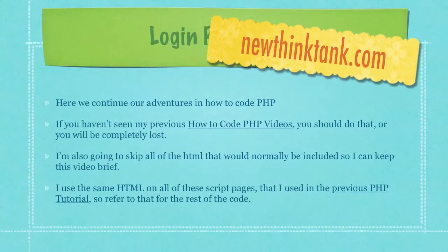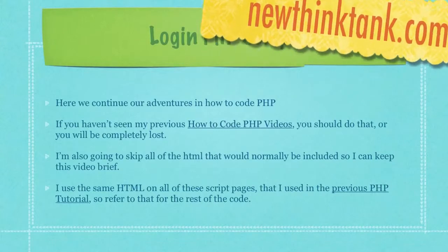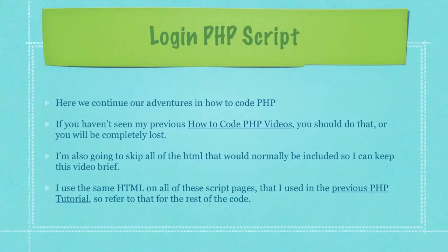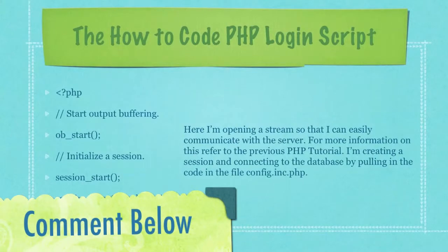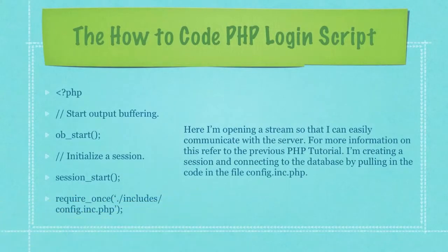I'm also going to skip all of the HTML that would normally be included so I can keep this video brief. I use the same HTML on all of these script pages that I used in the previous PHP tutorial, so refer to that for the rest of the code or refer to newthinktank.com to download all of this code. Here I'm opening a stream so that I can easily communicate with the server. For more information on this refer to the previous PHP tutorial. I'm creating a session and connecting to the database by pulling in the code in the file config.inc.php.